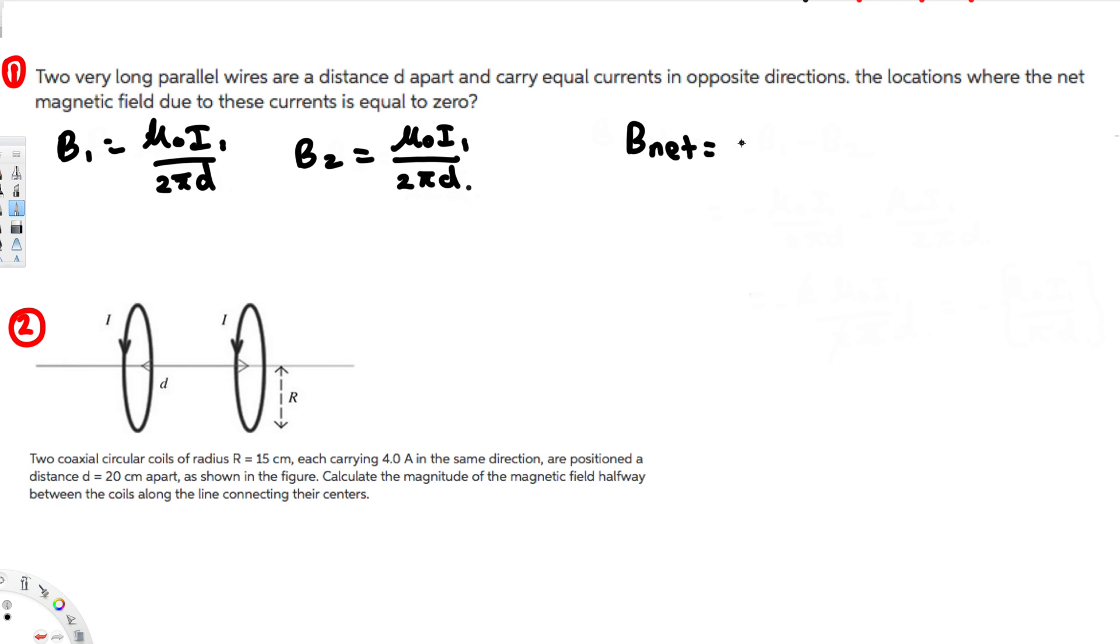Both of them are opposite to each other, so this is going to be negative μ₀I1 over 2πd minus μ₀I1 over 2πd. And finally you are going to end up with negative 2μ₀I1 over 2πd. So here we are going to cancel the two, and we are going to end up with negative μ₀I1 over πd.